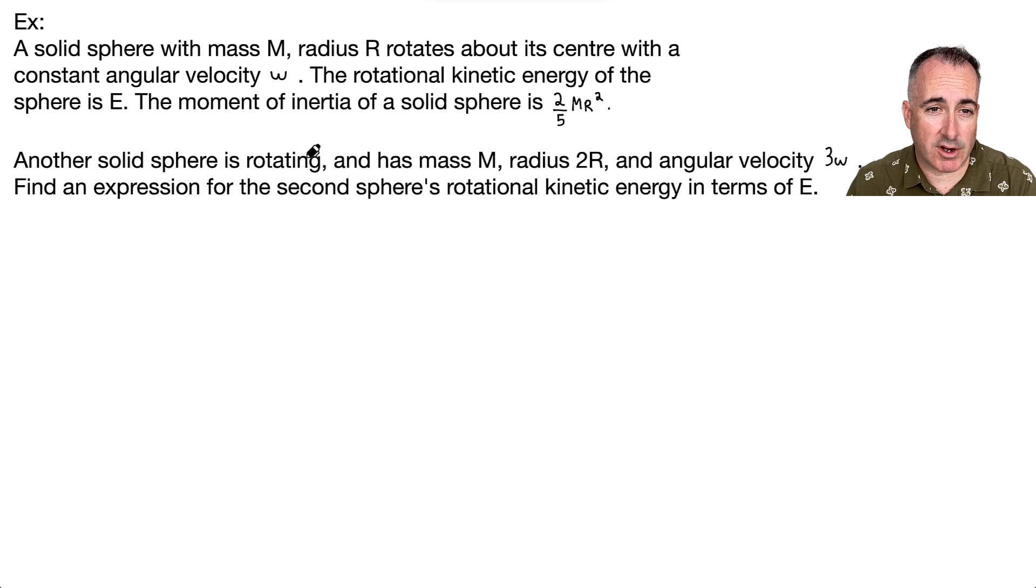Now we have another solid sphere rotating with mass M, same as before, but its radius is twice what the other one was, and its angular velocity is three times what the other one was. It's twice the radius and spinning faster. Find an expression for the second sphere's rotational kinetic energy in terms of E. This is a ratio question. I solve all ratio questions by writing an equation for new and doing new over old. I'm going to do it in a brute force way to show you every step.